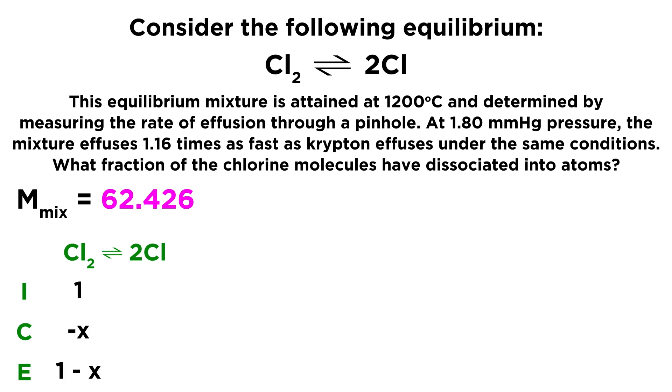So let's set up an ice box so that we can describe the equilibrium that is occurring in this system. Now for chlorine, we're going to say that we're starting at an initial concentration of 1, and then change is going to be minus x, because some of the chlorine molecules are going to dissociate, so we're going to lose some of the chlorine molecules, and then the equilibrium value will be 1 minus x. Then for the chlorine radicals, we're going to start with 0, but then the change will be 2x, because for every 1 chlorine molecule that dissociates, we get 2 chlorine radicals.